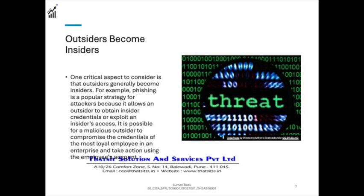There is the typical example of outsiders who become insiders. One critical aspect to consider is that outsiders generally become insiders by design to cause harm to the organization. For example, phishing is a popular strategy for attackers because it allows an outsider to obtain insider credentials or exploit insider access. It is also possible for a malicious outsider to compromise the credentials of the most loyal employee and take action using that employee's access.